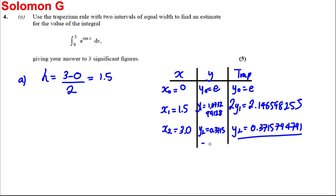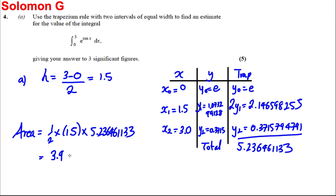Now I'm going to total these, and I'm going to get myself 5.236461133. So my area, my approximate for the area, is a half H, so half times H, which is 1.5, multiplied by this, which is 5.236461133. Tap that in the calculator.